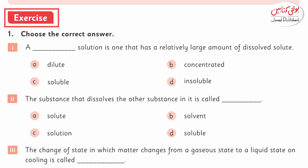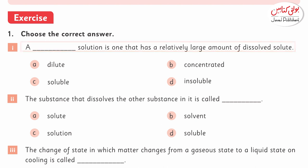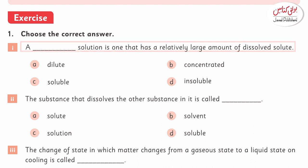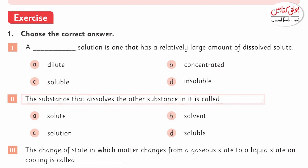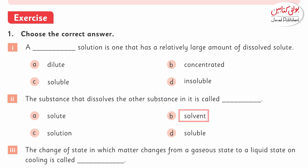Exercise page number 46. Choose the correct answer. A: A dash solution is one that has a relatively large amount of dissolved solute — dilute, concentrated, soluble, or insoluble. Option B, concentrated, is the right answer. B: The substance that dissolves the other substance is called — solute, solvent, solution, or soluble. Option B, solvent, is the right answer.